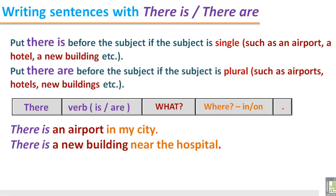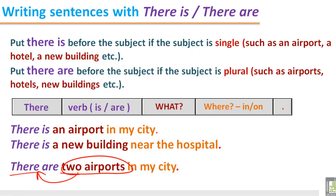Now we will see the use of there are. There are two airports in my city. It says two airports - it is a plural number, and that's why we put there are. There are two airports. And the same answer - where? In my city.